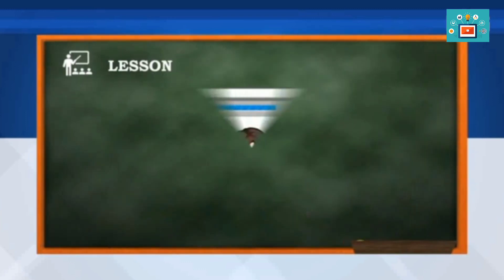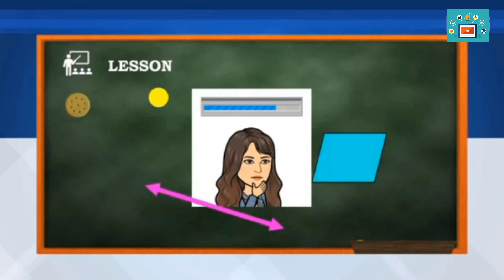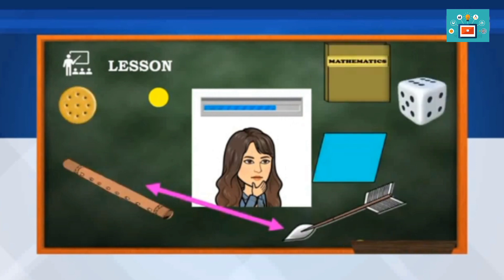You can also think of objects around you that can represent a point, a line, and a plane. Just try to observe your surroundings. I'm sure you can give more.